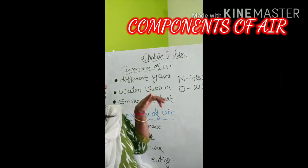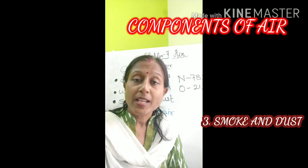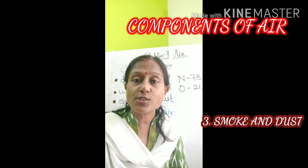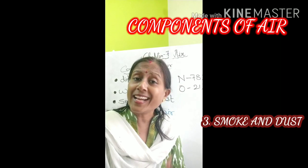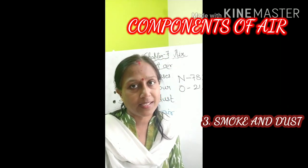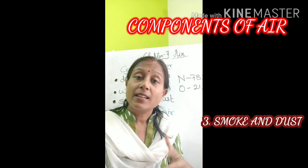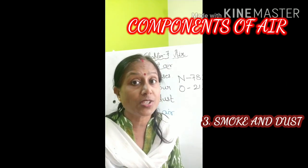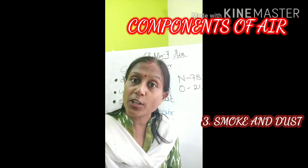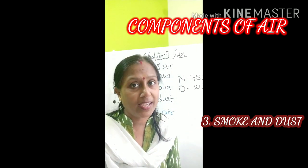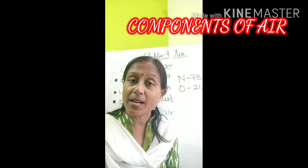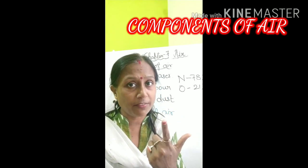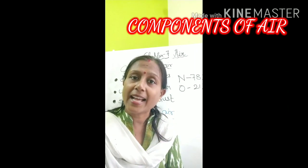The third component of air is smoke and dust. Apart from gases and water vapor, smoke and dust are also present in air. Their concentration differs from place to place. When smoke and dust get mixed with the air, they pollute the air, and this polluted air leads to air pollution. So the three major components of air are: different gases, water vapor, and dust and smoke.